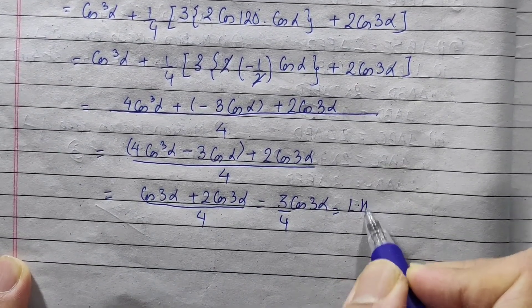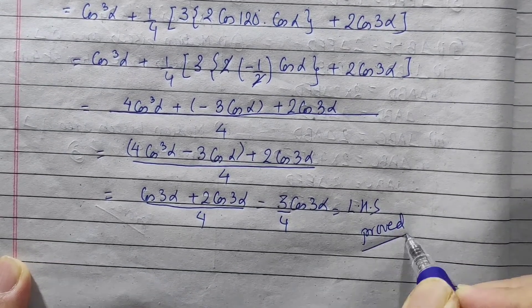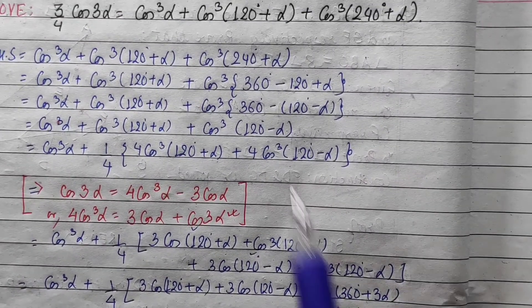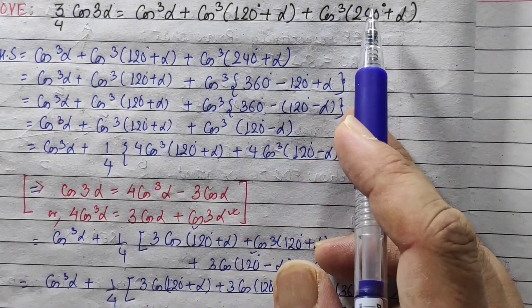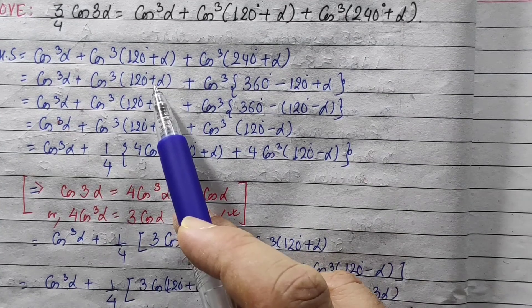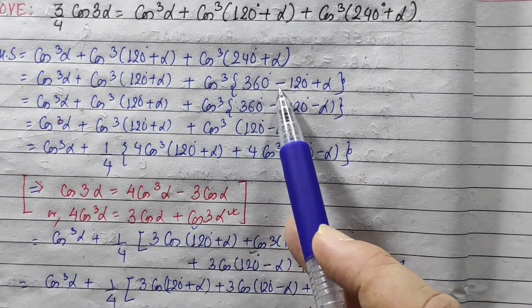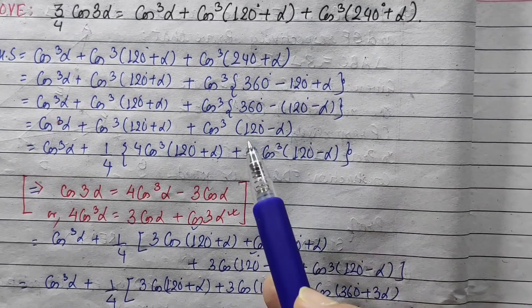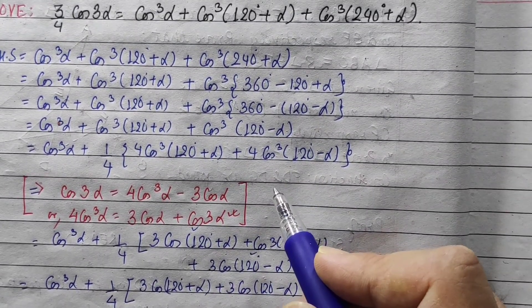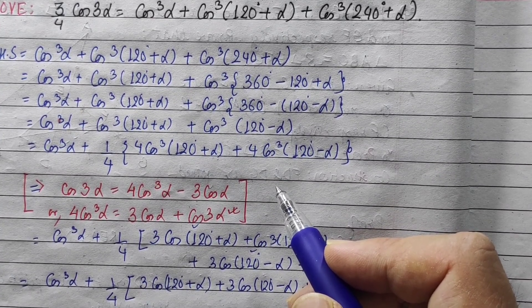This is why we know LHS is proved. The 1 by 4 into 4 works out. If we have the angle of 240, we can see it becomes 120. We can verify the details. Thank you.